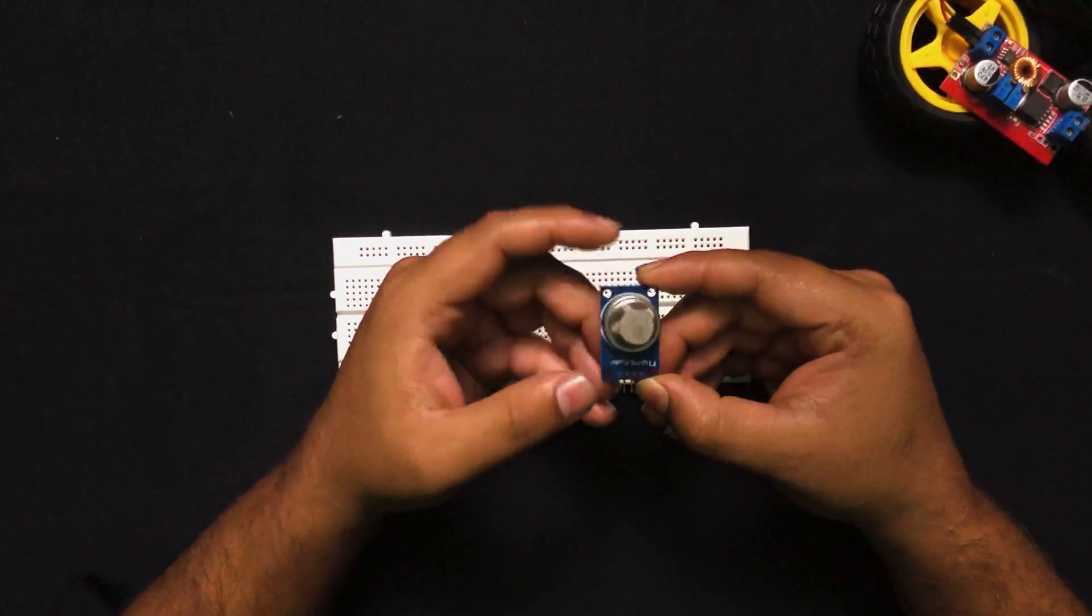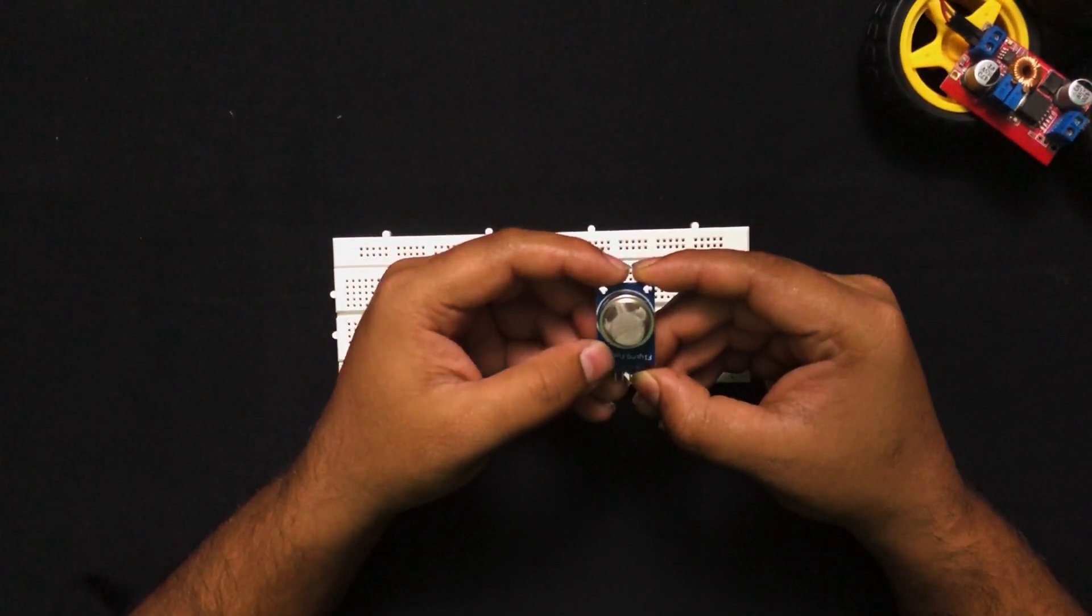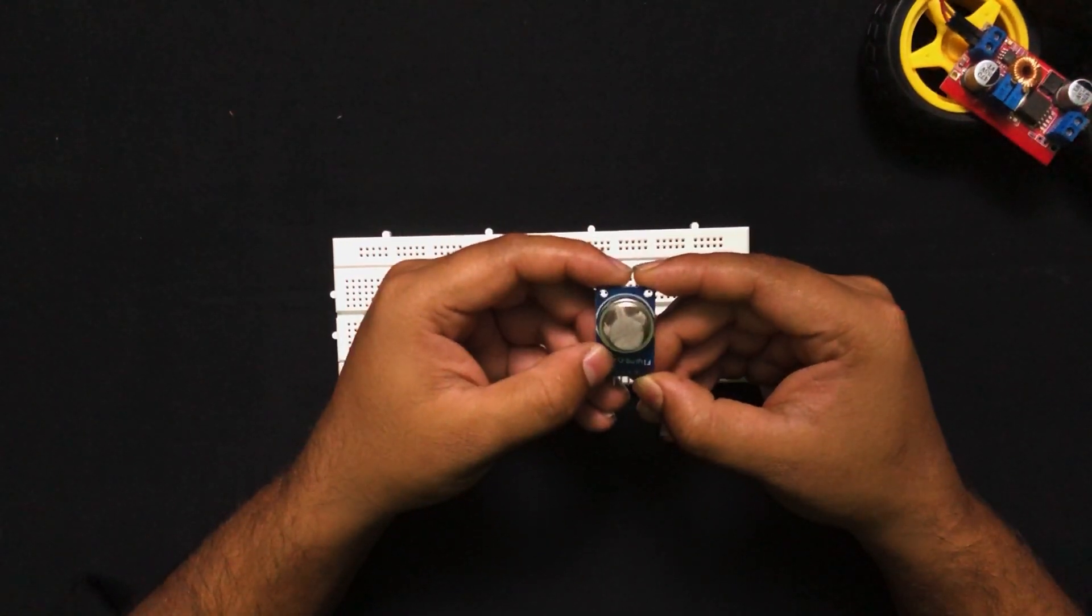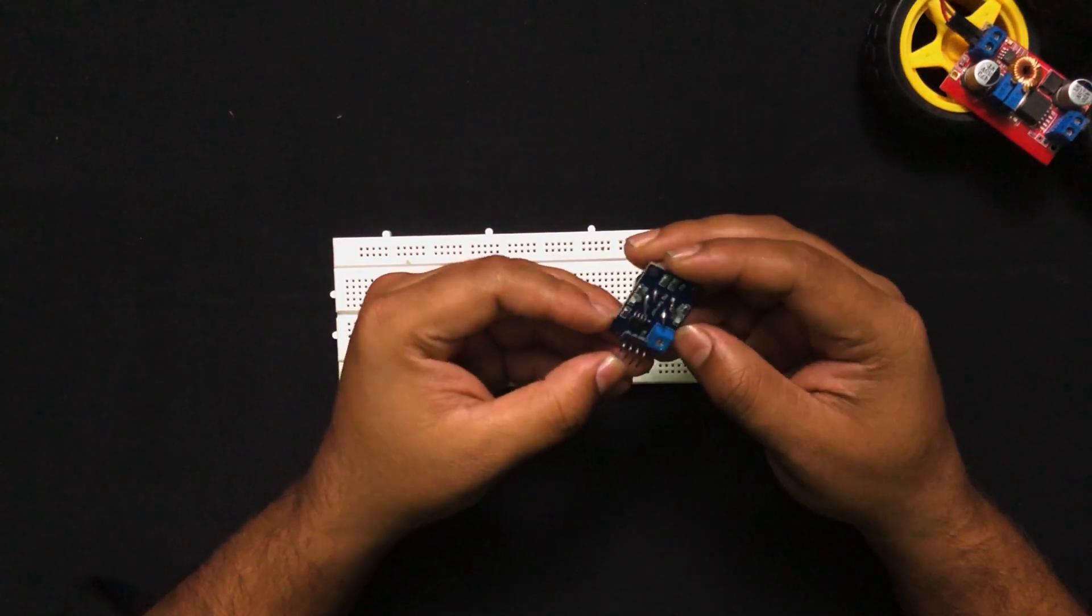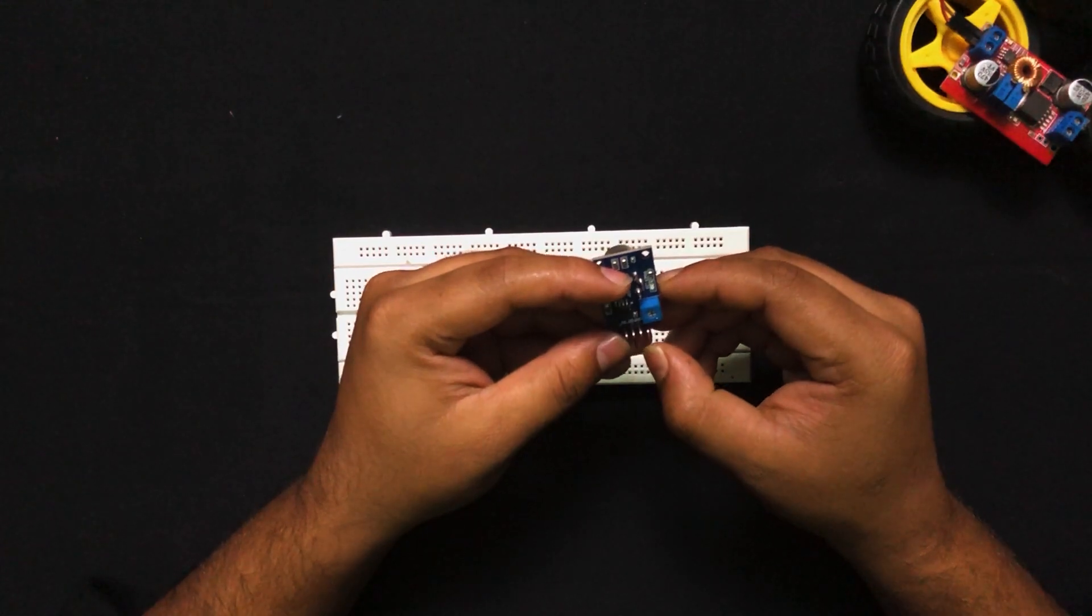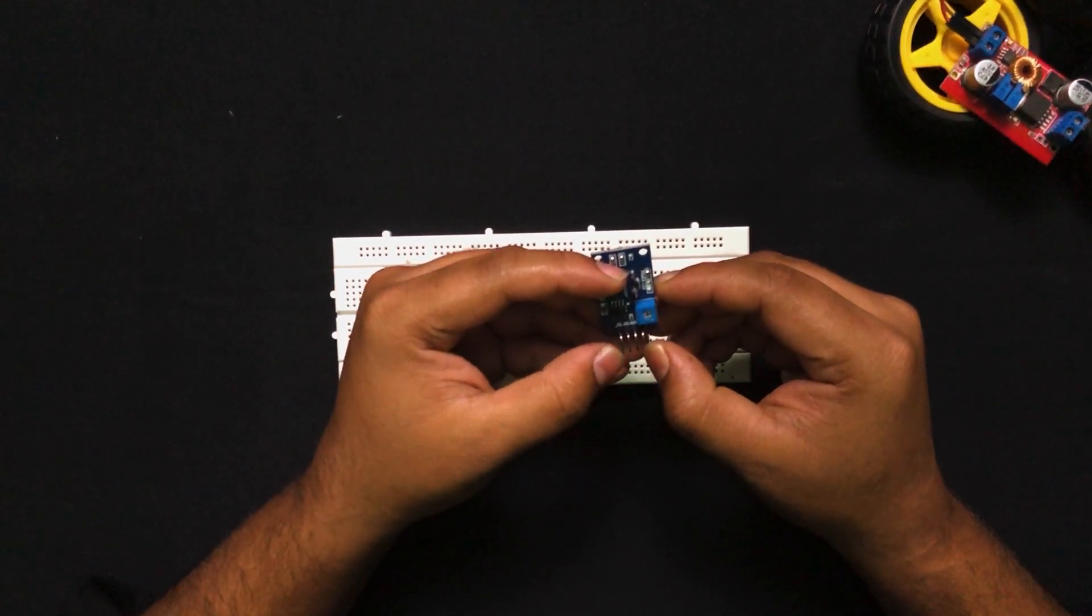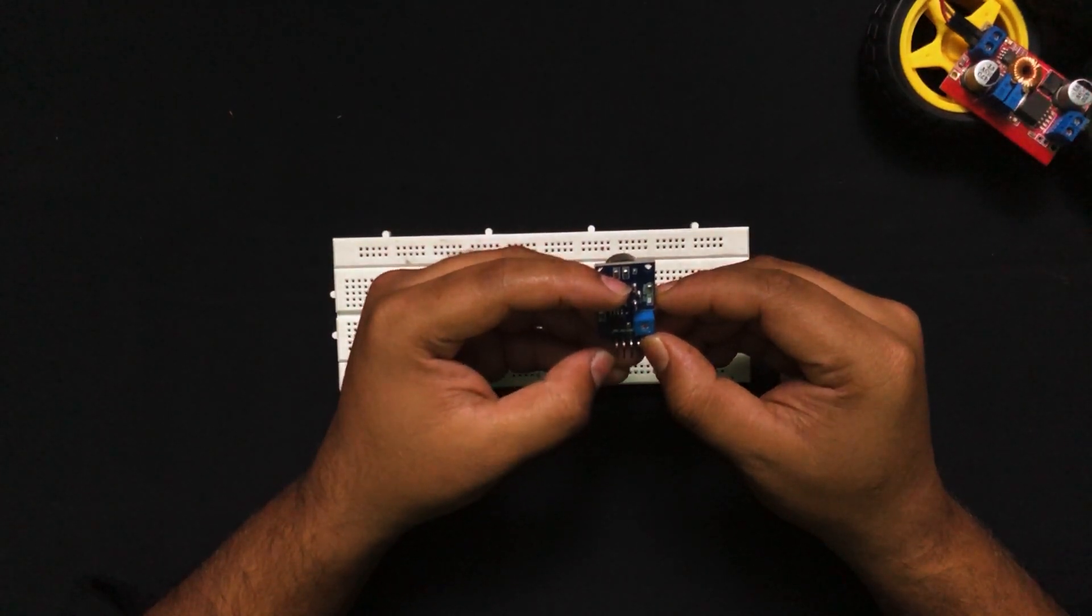Before going further, let us discuss something about this sensor. This is an MQ6 smoke sensor that is usually used for detecting gases like LPG, butane, etc. It has four pins: from the right it has VCC, then ground. These are both connections for powering it up, and then A0 and D0 pins.